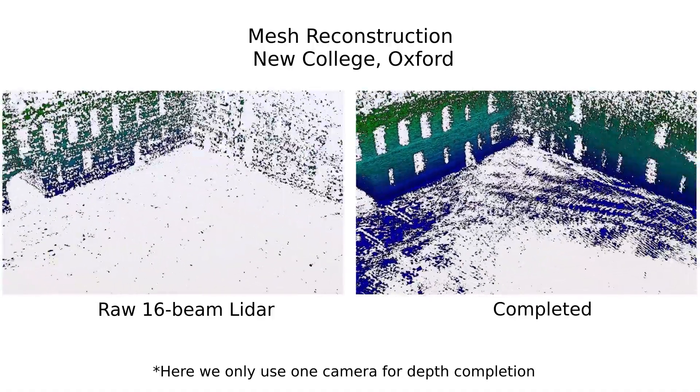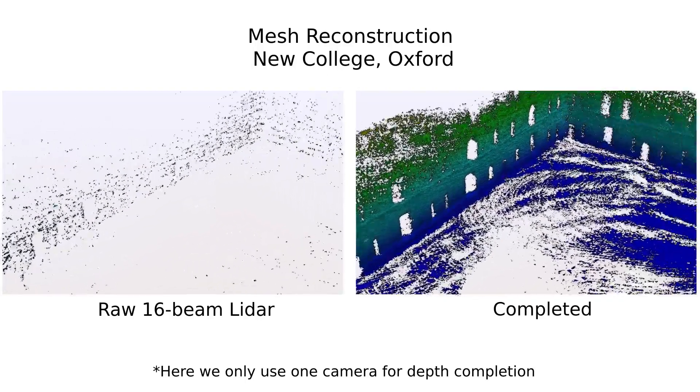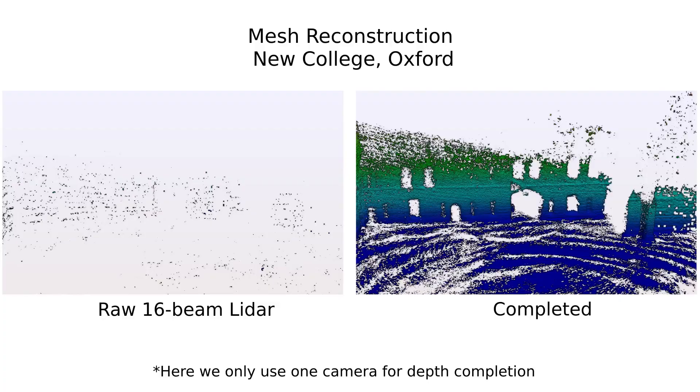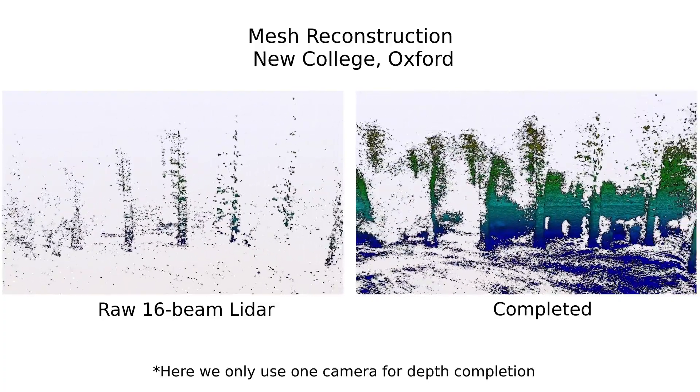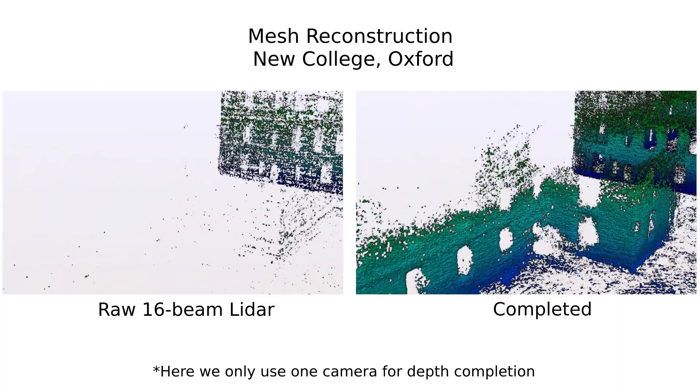We filter completed depths with high uncertainty to remove outliers. This, along with occupancy map fusion, helps us to retain reasonable accuracy and efficiency of the resultant reconstruction and free space.